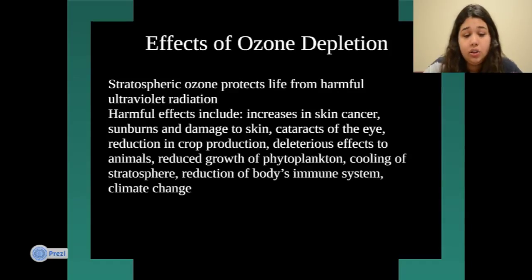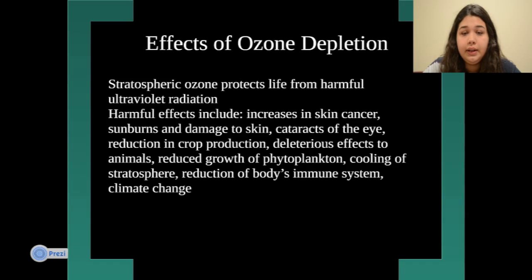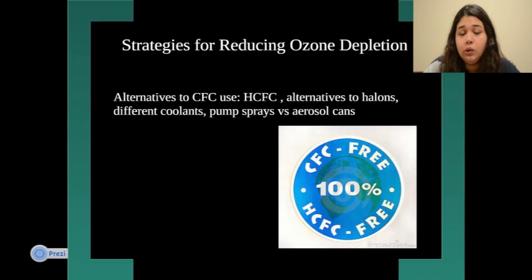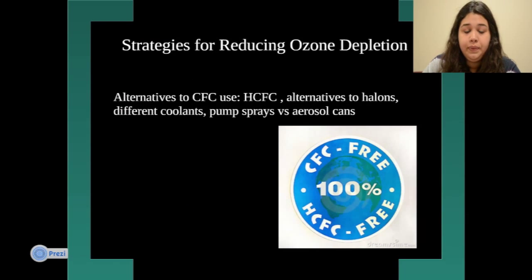Additional effects include reduction in crop production and harmful effects on animals. Ozone depletion has also led to reduced growth of phytoplankton, which are vital to ocean ecosystems and other animals. Further consequences include cooling of the stratosphere, reduction of the body's immune system, and climate change — all harmful effects caused by ozone depletion.